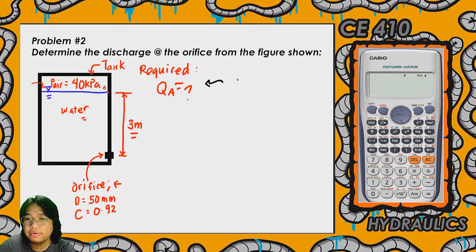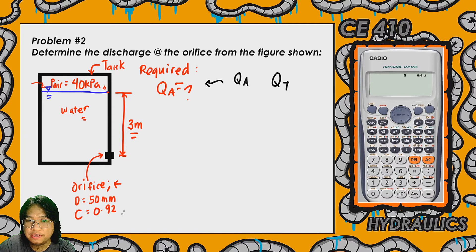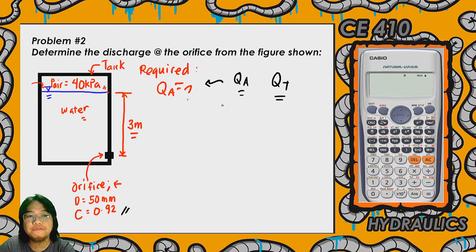So why I wrote Q sub a rather than Q sub t? It is because C is already given. If C is not given, then we can compute for Q sub a or actual discharge, and we can only compute for Q sub t or theoretical discharge. Also, if H_L or the head loss is given, so the system would be a non-ideal system, then the computed discharge on that particular equation would be also Q sub a.